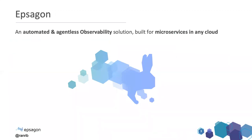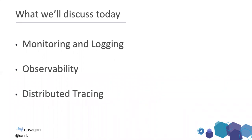Epsilon is doing an automated and agentless observability tool for microservices. I'm going to review most of these topics alongside the session, but if you're interested in learning more, you're welcome to visit the website. Today I'm going to talk about the full flow of observability — how it started with the initial steps of monitoring and logging, and then all the topics around observability, including distributed tracing. So let's kick it off.